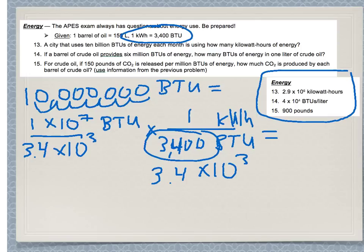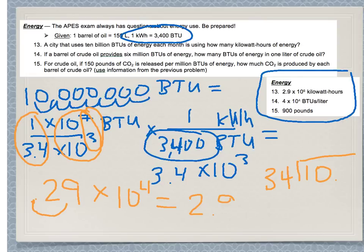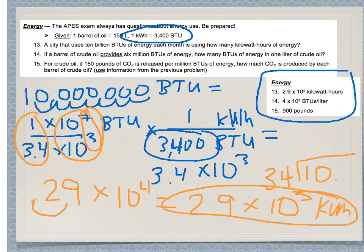Think of these separately — do the coefficient division and the exponent division. 1 divided by 3.4 equals about 0.29. Then subtract the exponents: 7 minus 3 gives 10 to the 4th. So 0.29 times 10 to the 4th — but I need to convert that to proper scientific notation, giving 2.9 times 10 to the 3rd kilowatt hours. See if you can try the others as well.